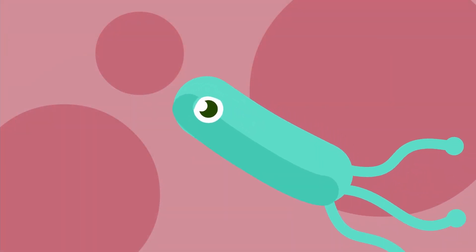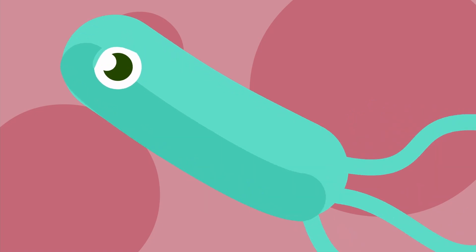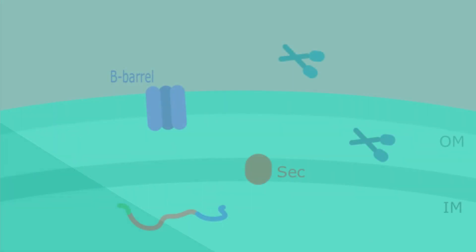Today we're covering type 5 secretion system and we're using Helicobacter pylori as the example of a bacteria using type 5 secretion.